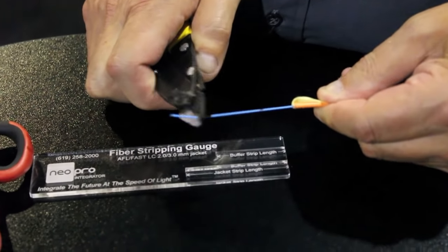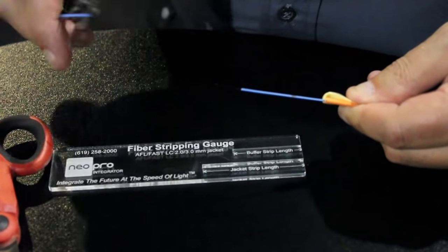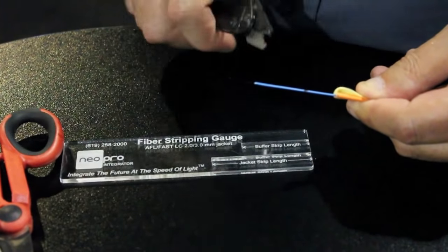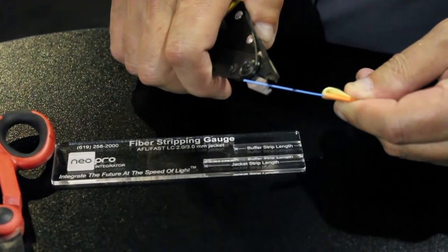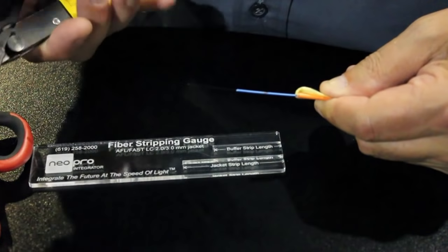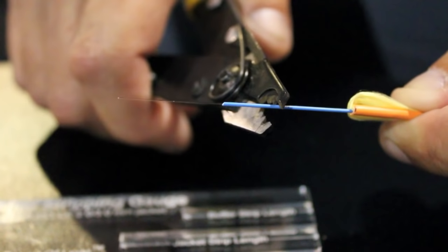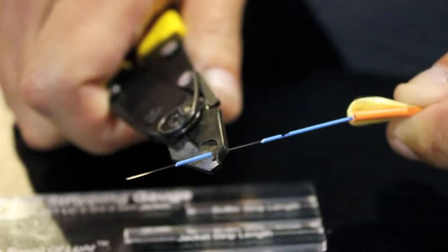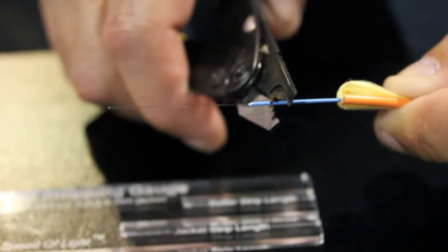It helps if you hold the strippers at a slight angle. That'll help from keeping the fiber, the glass itself, from getting kinked and bending and actually breaking. So if you start with the stripper at a slight angle, like shown, then the fiber doesn't want to break on you. And just strip it back until you get to your mark.